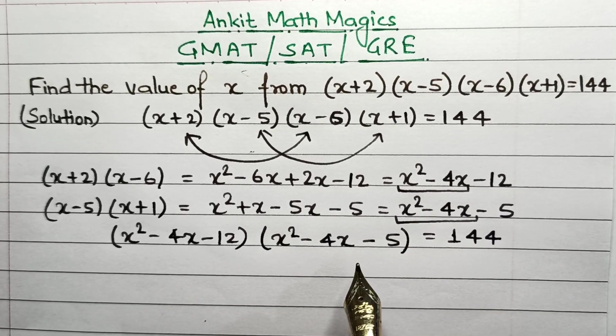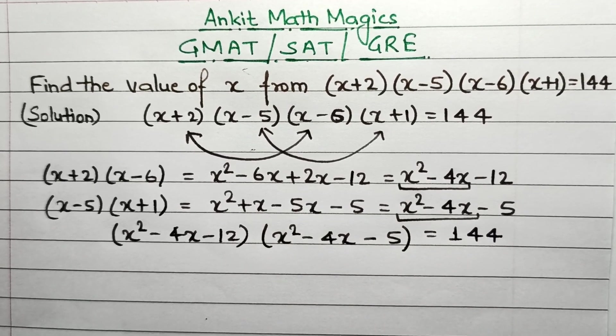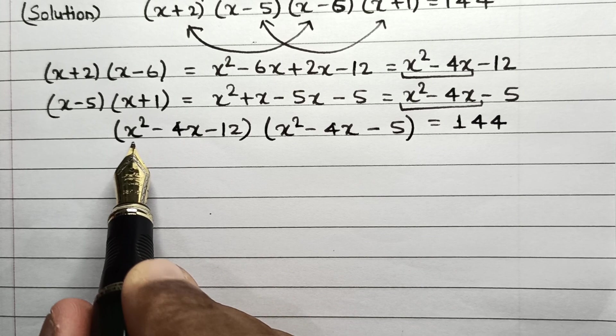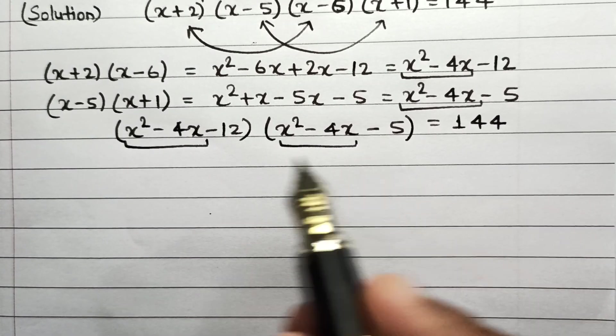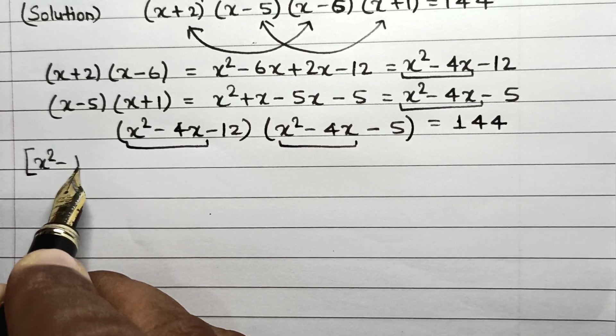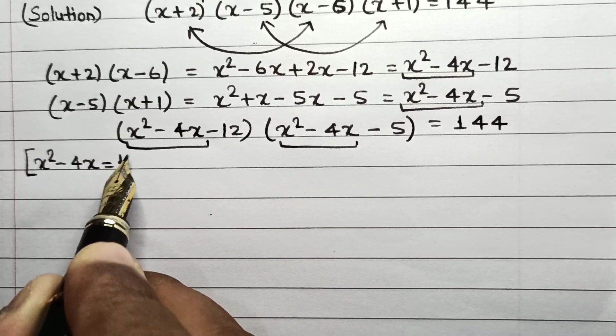Now to further simplify these kinds of problems, the next task is to substitute this particular part which is common in both equations as p. So let us suppose that the value of x² - 4x is taken as p.